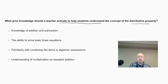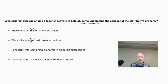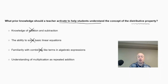Knowledge of addition and subtraction is important, but it's not really the building block for the distributive property, so I'm going to eliminate that choice. The ability to solve basic linear equations would be steps after we learn the distributive property — moving things from one side of the equal sign to the other — so I'll eliminate that. Familiarity with combining like terms is similarly a building block for solving equations, so I'll eliminate that as well.